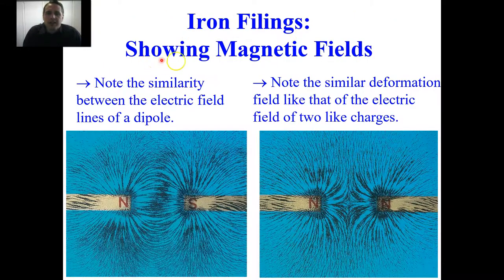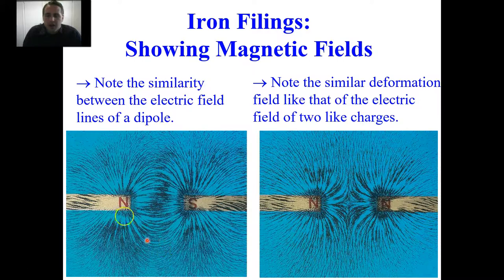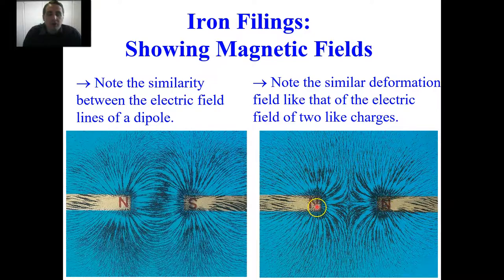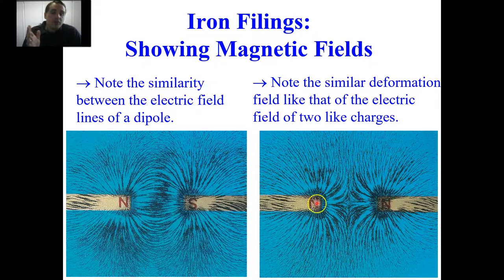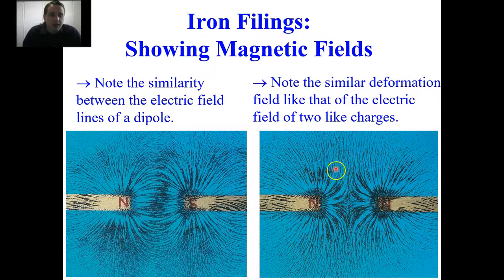If you have north-south poles of two bar magnets, the shape of iron filings looks very similar to an electric dipole in terms of symmetry. We also have similar symmetry in a deformation field if you have north-north or south-south magnets. With north-north or south-south and iron filings, just as with electric fields, we don't necessarily know the direction of the magnetic field lines from filings alone, so we choose a convention: field goes out of north, and for south-south poles the lines go inward toward those south poles.